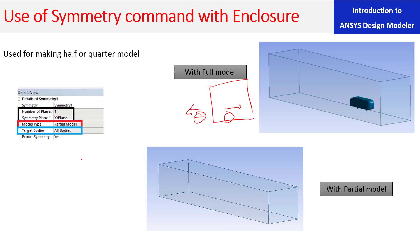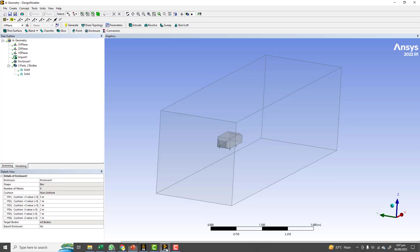The 'target body' option — you know what that is, it's the ML body in this case. 'Export symmetry' is about the symmetry boundary condition. If you don't want to create name selections yourself, this will automatically export the symmetry plane at that location. However, if you're just using the symmetry command to reduce the domain height and you plan to define your own boundary condition by name selection, then you don't need to export symmetry — so in that case I would choose 'No'.